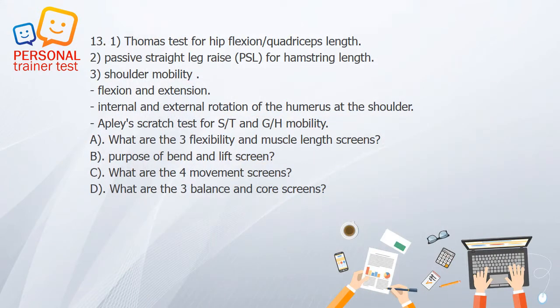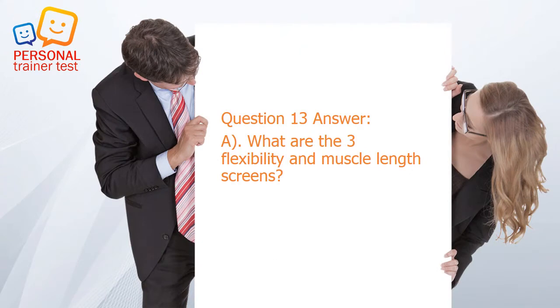Question 13. A. What are the three flexibility and muscle length screens? B. Purpose of bend and lift screen. C. What are the four movement screens? D. What are the three balance and core screens? Answer: A. The three flexibility and muscle length screens are: 1. Thomas test for hip flexion and quadriceps length; 2. Passive straight leg raise (PSL) for hamstring length; 3. Shoulder mobility — flexion and extension, internal and external rotation of the humerus at the shoulder, and Apley scratch test for ST/GH mobility.